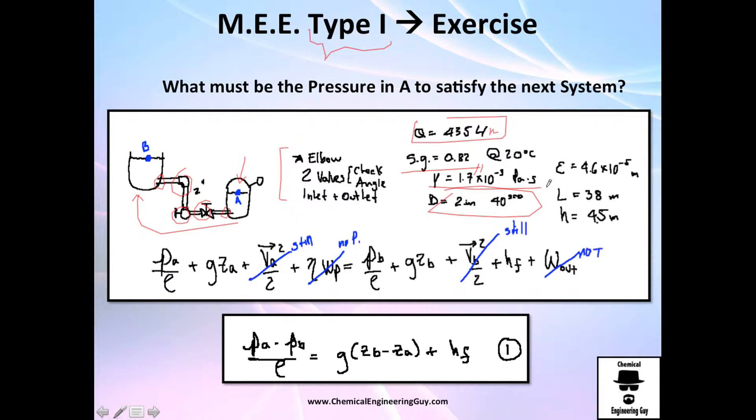The size of the piping is given, it's 2 inches and it's a 40 scheduled size. You know the material, it's iron or steel. You got the length, the total length of the pipe, and you got the height.